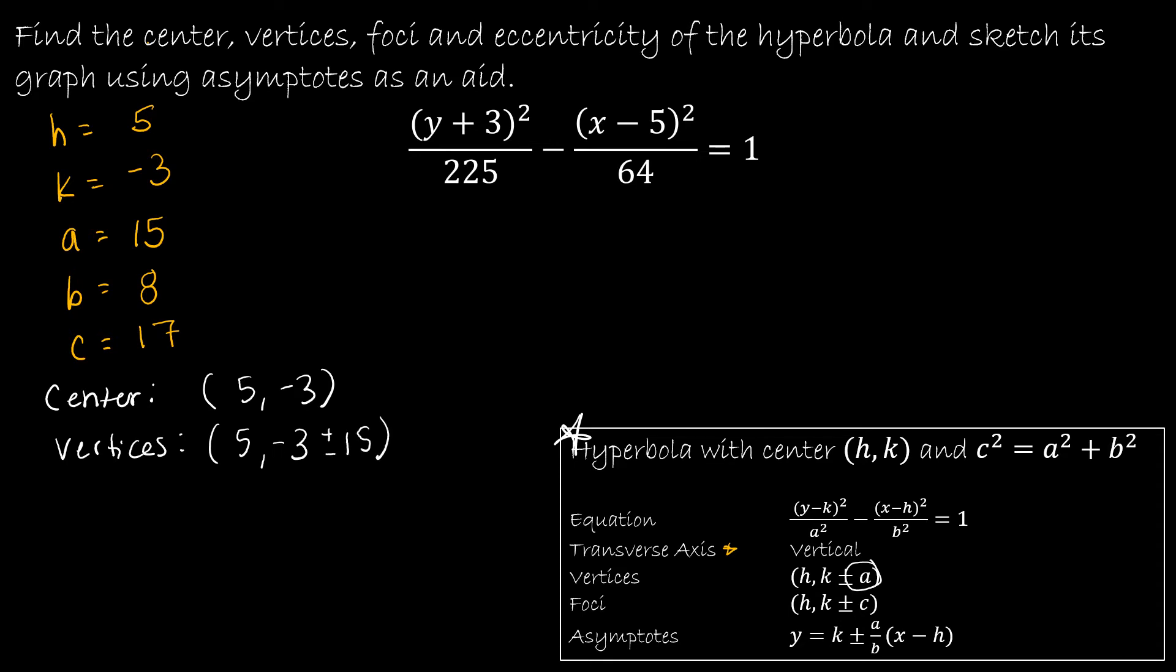So that's going to give me 5, negative 3, plus 15, and then negative 3, minus 15. And then I'm going to find the foci. And that's also 5, negative 3. But I'm adding and subtracting C, which is 17. So that's 5, 14, and 5, negative 20.